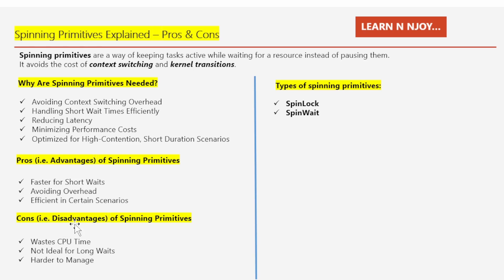Now for the cons — that is, the disadvantages. The first disadvantage is wasting CPU time. When a task is spinning, it's just checking over and over again for the resource to become available. If the wait is long, that's valuable CPU time that could be used for something else. The second disadvantage is that spinning is not ideal for long waits: if the resource is going to take a while to become free, spinning is inefficient — in such cases it's better to let the task sleep and resume when ready, as spinning will just burn CPU cycles unnecessarily. The third disadvantage is that spinning is harder to manage: using spinning primitives requires careful design, and if not handled properly they can lead to performance issues, especially on systems with limited processing power.